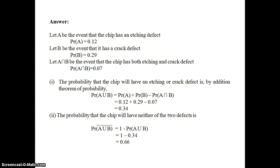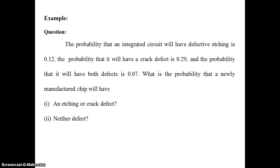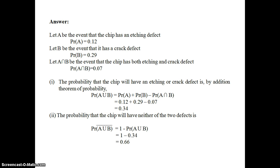Let B be the event that the chip has a crack defect, so probability of B equals 0.29. And let A intersection B be the event that the chip has both defects, so probability of A intersection B equals 0.07. Now let's find the answer to the first question: the probability of an etching or crack defect. Using the Addition Theorem, probability of A union B equals probability of A plus probability of B minus probability of A intersection B.